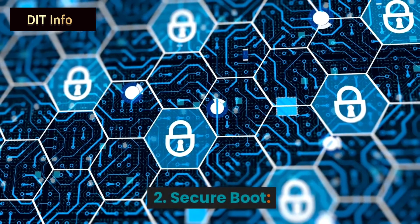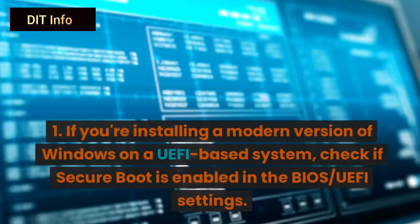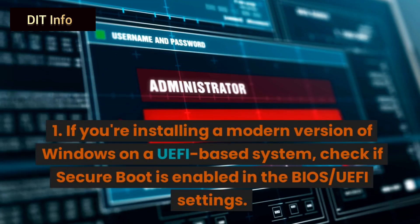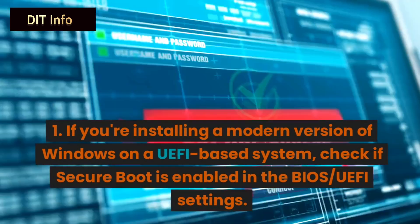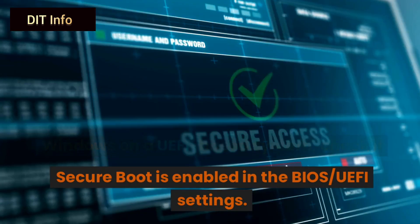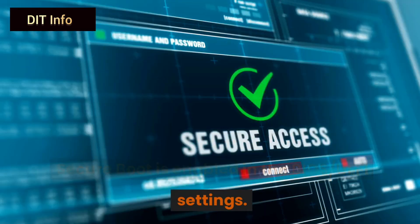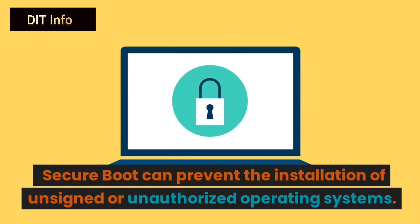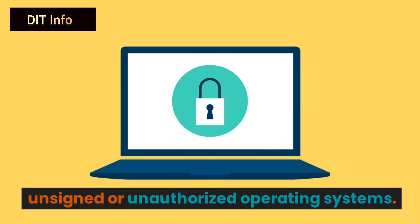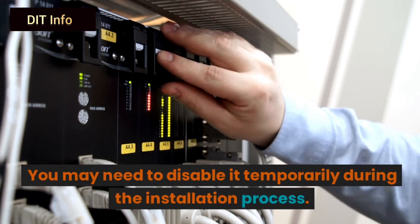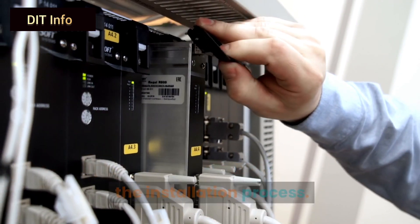2. Secure Boot. If you're installing a modern version of Windows on a UEFI-based system, check if Secure Boot is enabled in the BIOS/UEFI settings. Secure Boot can prevent the installation of unsigned or unauthorized operating systems. You may need to disable it temporarily during the installation process.